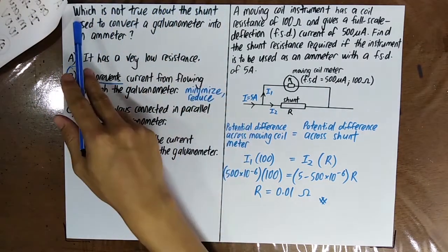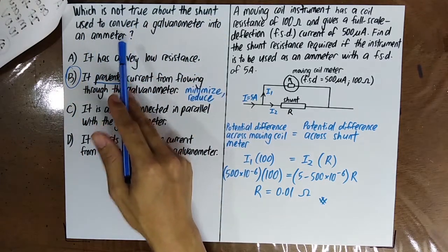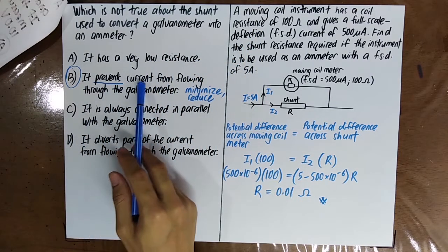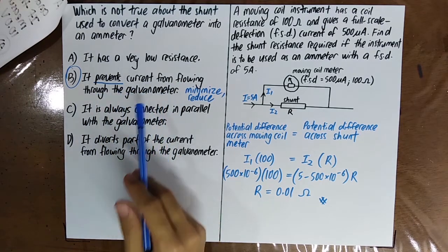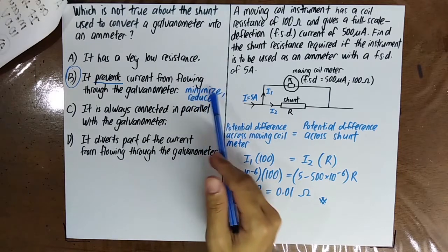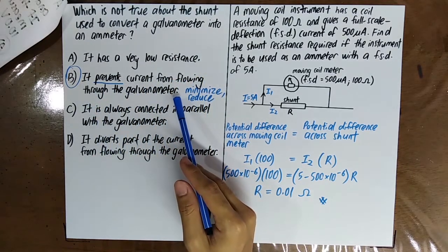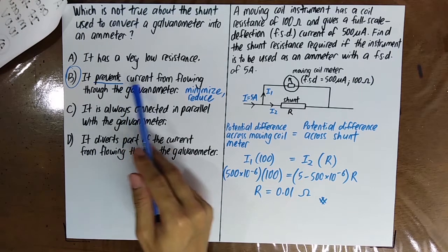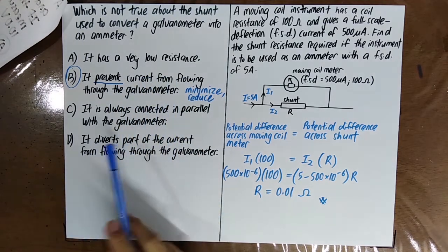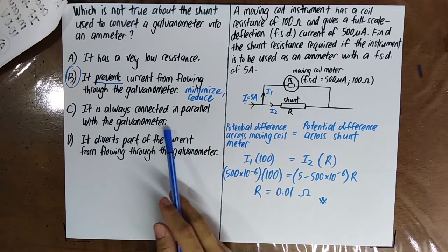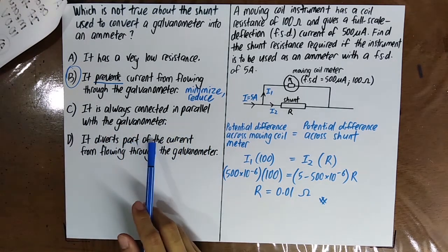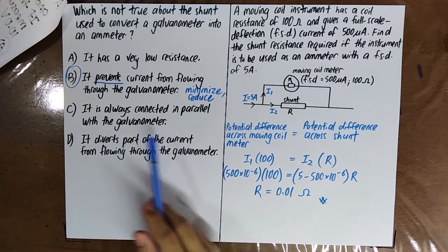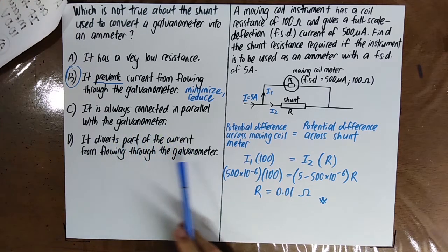Which statement is not true about the shunt used to convert a galvanometer into an ammeter? 'A shunt has a very low resistance' — yes, this is true. 'A shunt prevents current from flowing through the galvanometer' — no. The shunt minimizes or reduces the current from flowing through the galvanometer, but it cannot possibly prevent it entirely; there is still some very little current that flows through the galvanometer itself. 'The shunt is connected in parallel with the galvanometer' — yes. 'The shunt diverts part of the current from flowing through the galvanometer' — yes; in fact, only a very, very small part of the current will flow through the galvanometer itself.